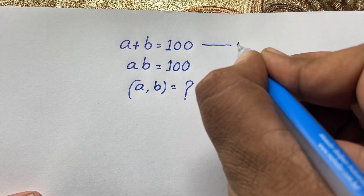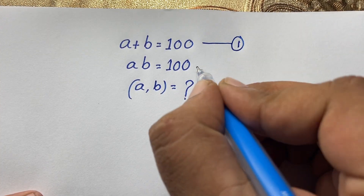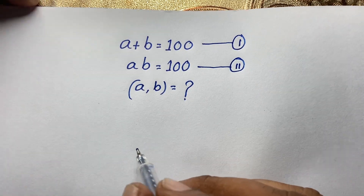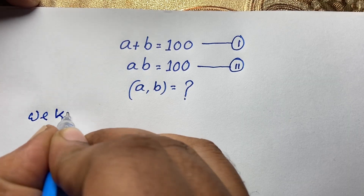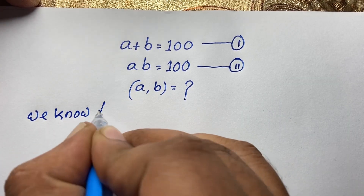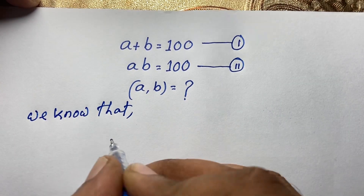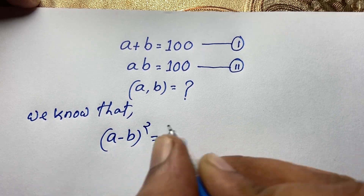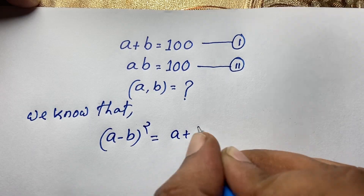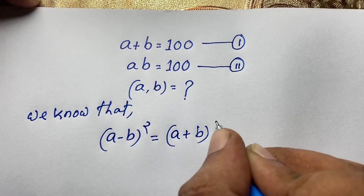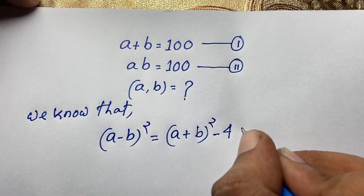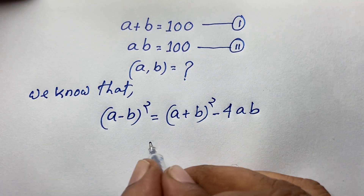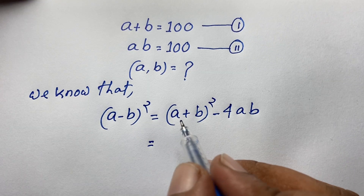This is our first equation and this is our second equation. We know that a minus b whole squared equals a plus b whole squared minus 4ab. I will solve this question using two methods.